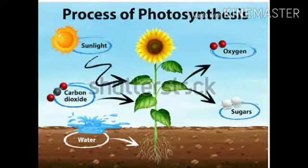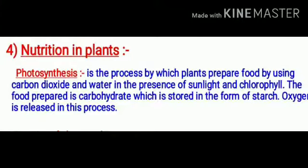As you all already know that carbon and energy requirements of the autotrophic organism are fulfilled by photosynthesis. The raw materials are carbon dioxide and water which are converted into carbohydrates in the presence of sunlight and chlorophyll. Thus, photosynthesis is the process by which green plants prepare food by using carbon dioxide and water in the presence of sunlight and chlorophyll.